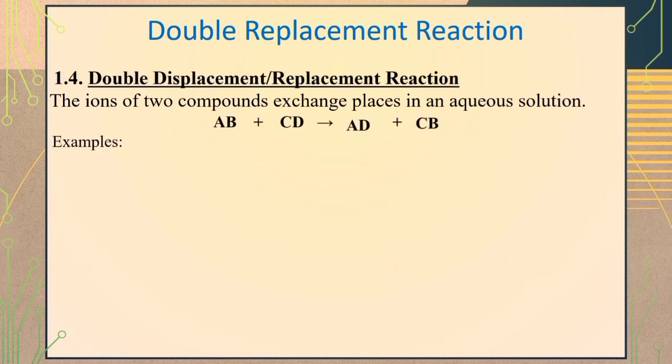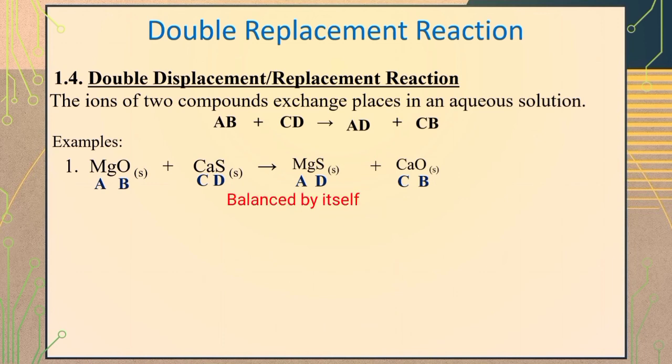Let's have some examples. In a reaction of compounds magnesium oxide and calcium sulfide, it will form the products magnesium sulfide plus calcium oxide. With just a glance, we can say that the equation is balanced by itself with one atom each of the components.